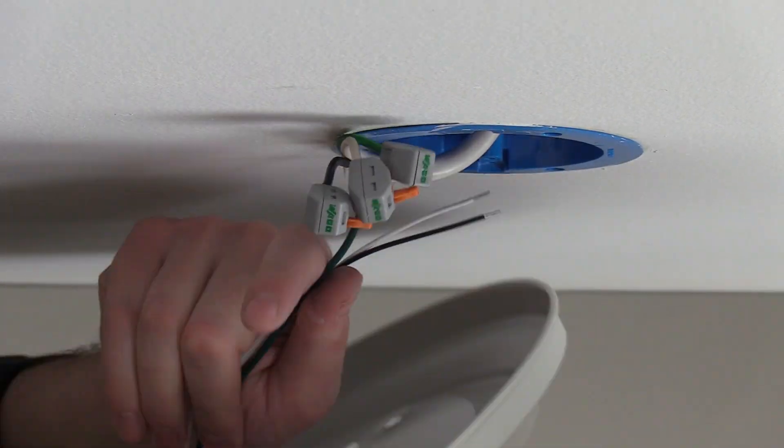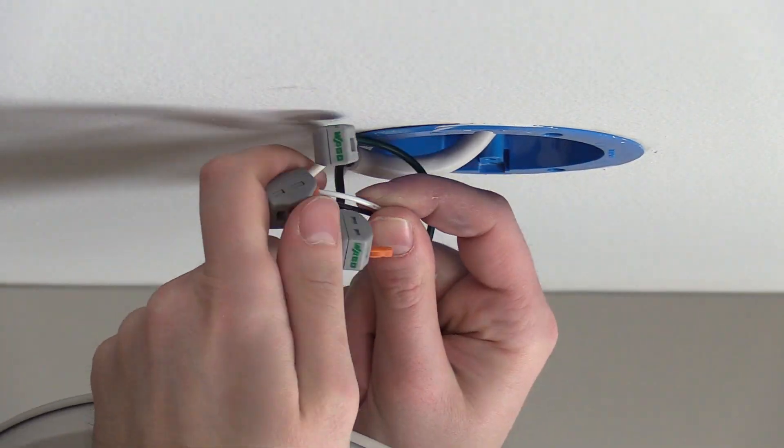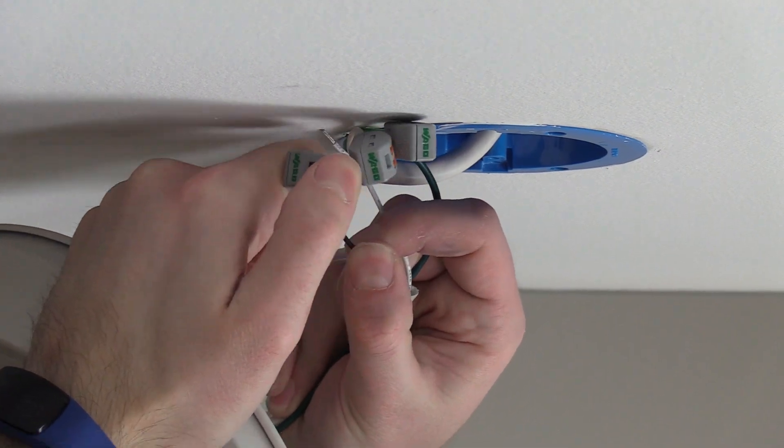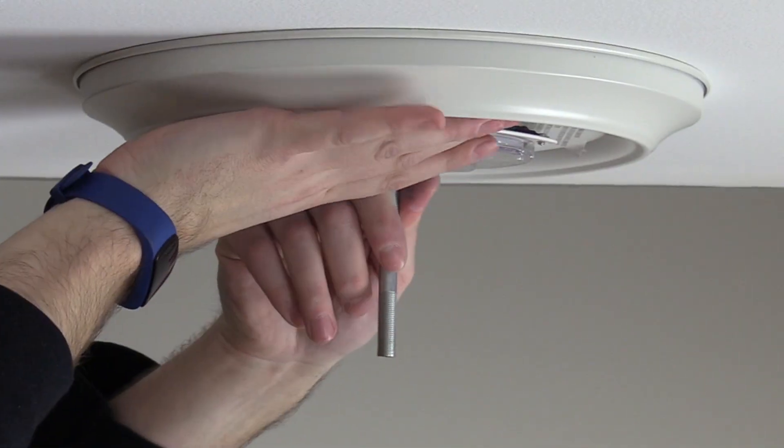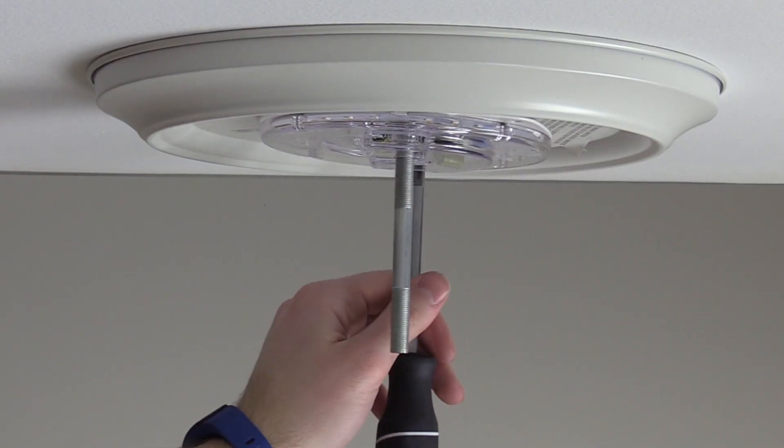Now, we can make our wiring connections according to the diagram located in the instruction manual. Tuck wiring connections into the J-Box and mount the ceiling pan to the ceiling.